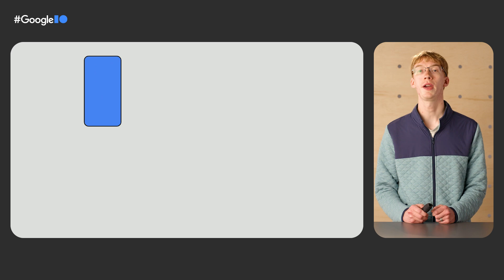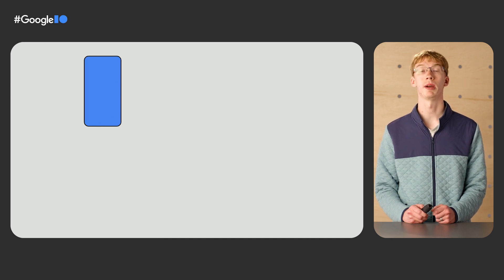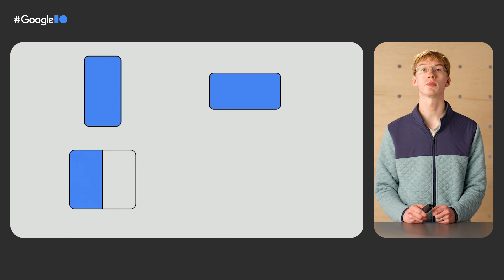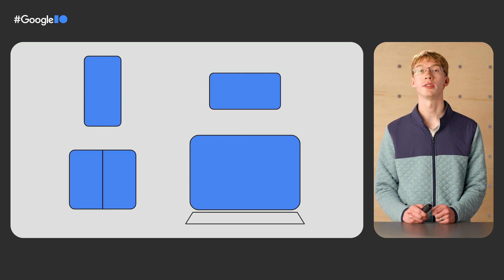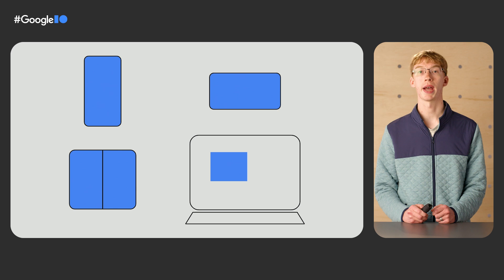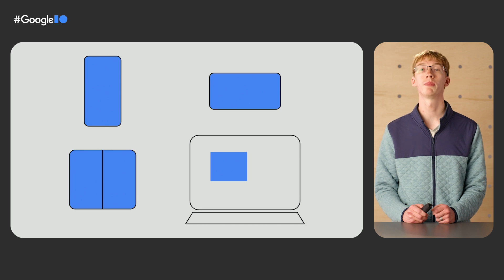Whenever a user launches your app, they are giving you some screen real estate to display something useful to them. On smartphones, it's pretty common to have the whole screen to work with, but the screen might be wider, shorter, or in different orientations. On foldables or tablets, it's more likely that the user might split the screen between your app and another to multitask. On foldables, there might even be more than one physical screen your app can run on. In a windowed environment like Chrome OS, your app might be resized just like a website in a desktop browser. The most important detail across all these scenarios is the screen size currently available to your app. If you can adapt your content to all these cases and handle when they change, you'll be providing a great user experience on current and future devices.